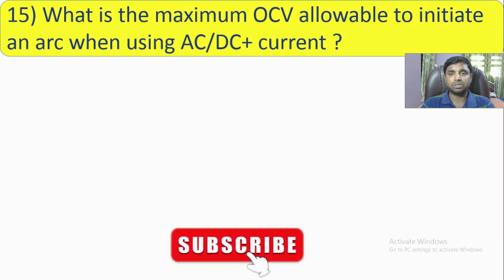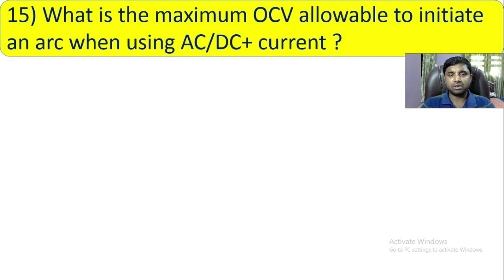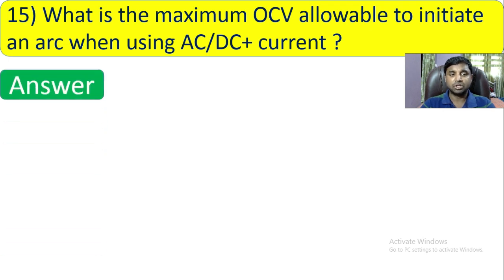Question number 15: What is the maximum OCV allowable to initiate an arc when using AC or DC positive current? This is a very important question. The maximum OCV allowable to initiate an arc should be 1000 volts.